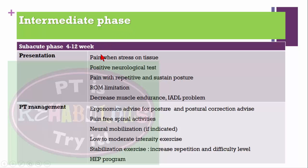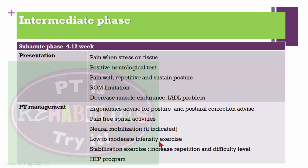The intermediate or subacute phase lasts 4 to 12 weeks. Patient presentation: pain when stress is placed on tissue, positive neurological tests, pain with repetitive strain or sustained posture, limitation in range of motion, decreased muscular endurance, and problems with instrumental activities of daily living. Physical therapy management: give ergonomic advice for posture correction, pain-free spinal activities, neural tissue mobilization when appropriate, low to moderate intensity exercises, and increase repetition and difficulty level for stabilization exercise progression. Also provide a home exercise program.